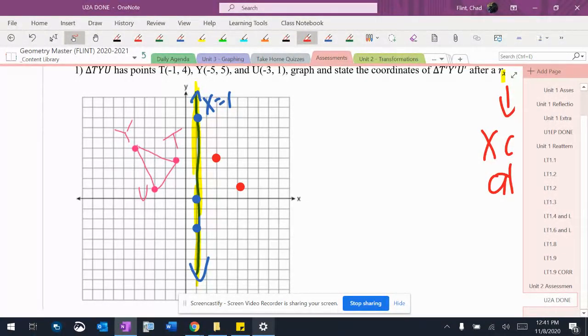And then 1, 2, 3, 4, 5, 6. 1, 2, 3, 4, 5, 6. There's where Y goes.